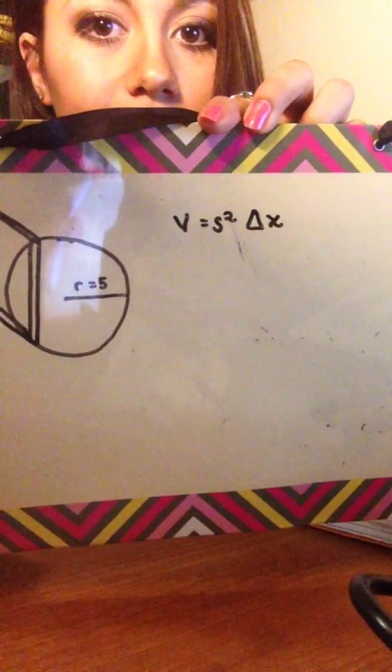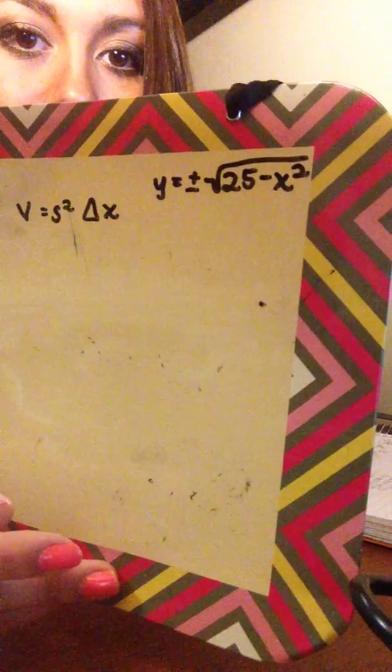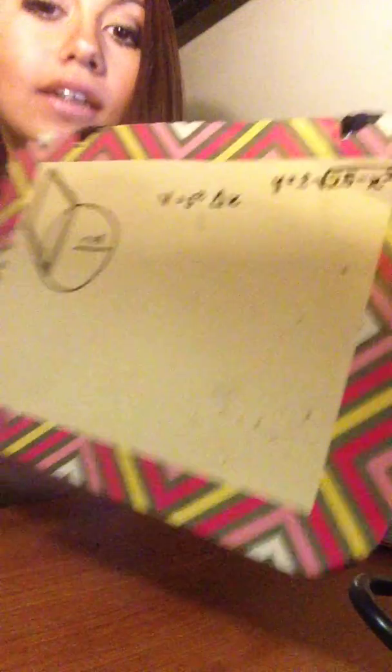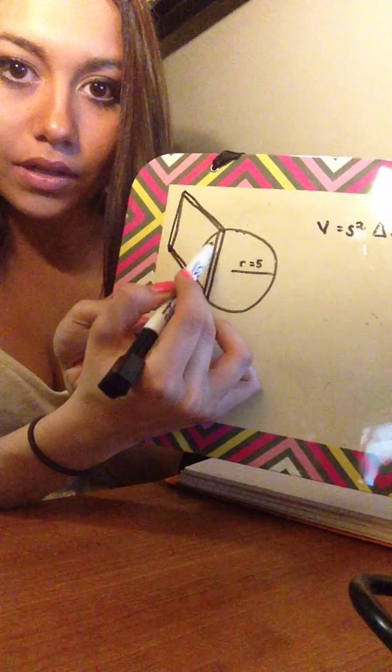That's your volume, and you're going to get the side in terms of x. So you're going to need the formula for your circle in terms of x: y equals plus or minus the square root of 25 minus x squared. That's your formula for the circle.